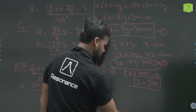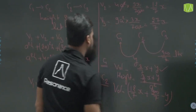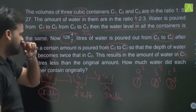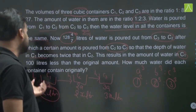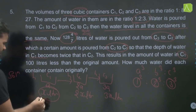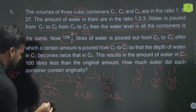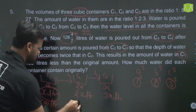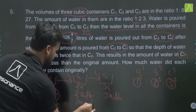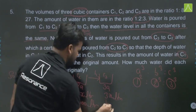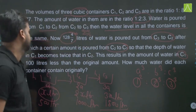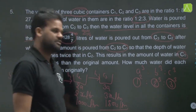With x = 500, the initial water amounts are: C1 = 500 liters, C2 = 2×500 = 1000 liters, C3 = 3×500 = 1500 liters. I hope this is clear to all of you.